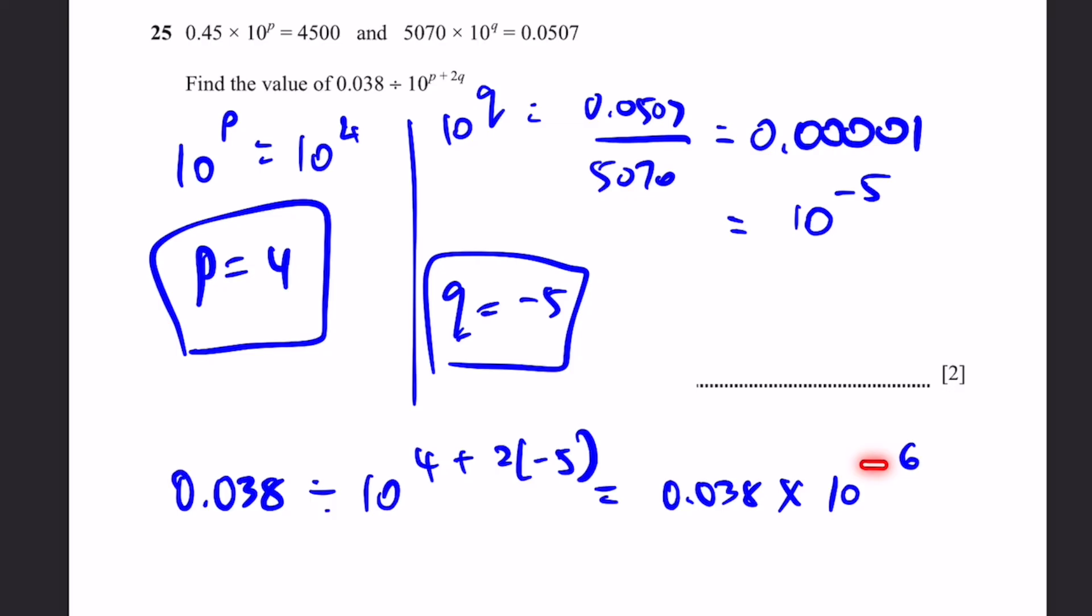And this is equivalent to multiplying by the negative power. But because it's already negative, adding another negative to it just cancels that negative out. So it's 10 to the power of 6 multiplication. And we get, if we did it correctly, 38,000.